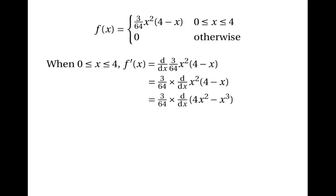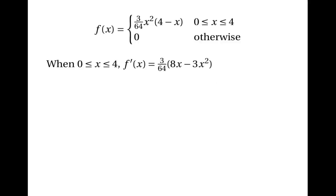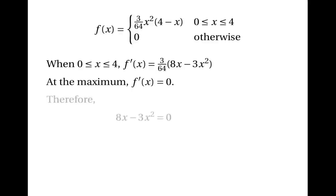That is (3/64) · d/dx of (4x² − x³), which equals (3/64) · (8x − 3x²). So f′(x) = (3/64) · (8x − 3x²). At the maximum, f′(x) = 0, so we solve 8x − 3x² = 0, which factorises to x(8 − 3x) = 0.